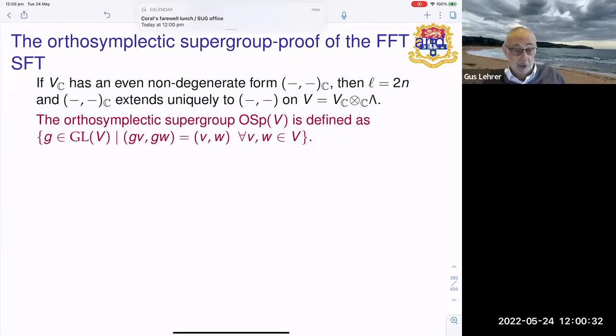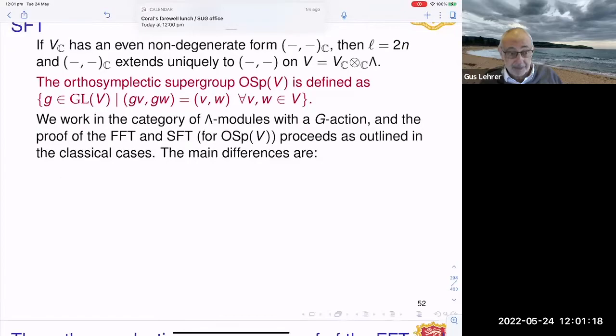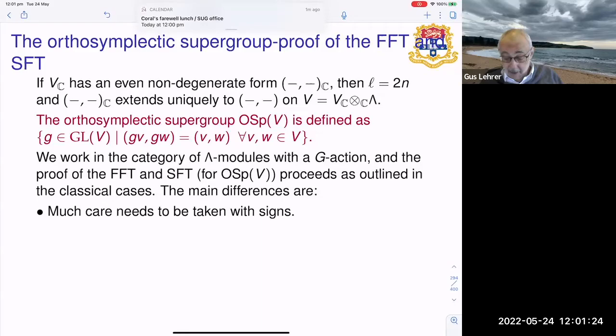And the orthosymplectic supergroup is defined as the set of those elements of GL(V) which preserve that form, that extended form. Now notice that the elements of OSP and GL are all even by definition. We now work in a category of Lambda modules with a G action, and the proof of the first and second fundamental theorems proceeds, morally in any case, in a similar way to the proof using appropriate geometric techniques as in the classical cases.